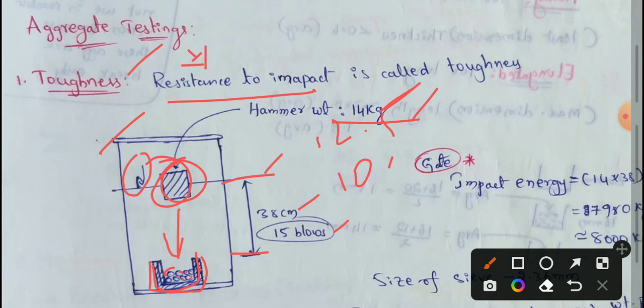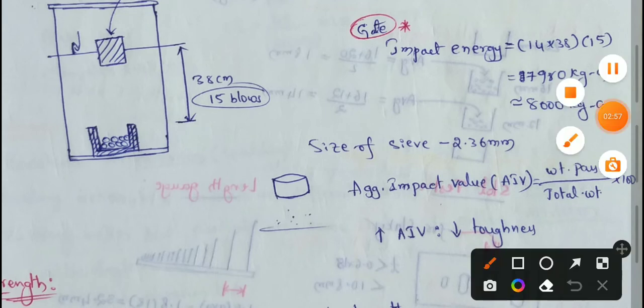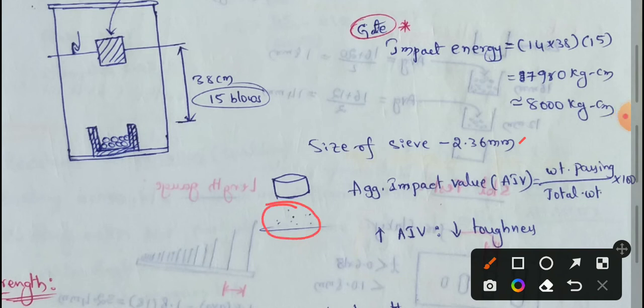The hammer is released from 38 cm and the blows are counted. Then the aggregate is brought out and weighed. If the material passes through 2.36 mm sieve, that weight will be used to calculate the Aggregate Impact Value.